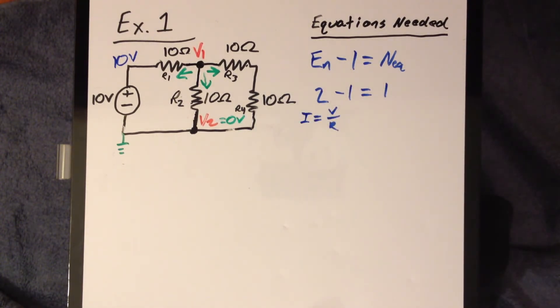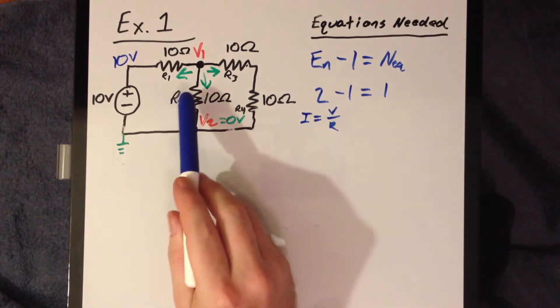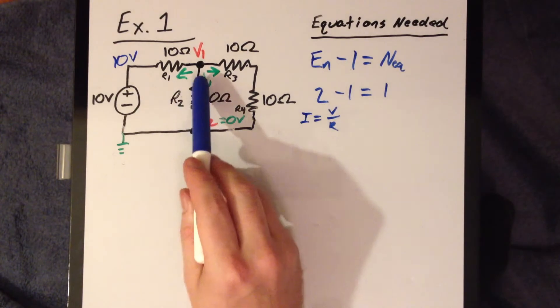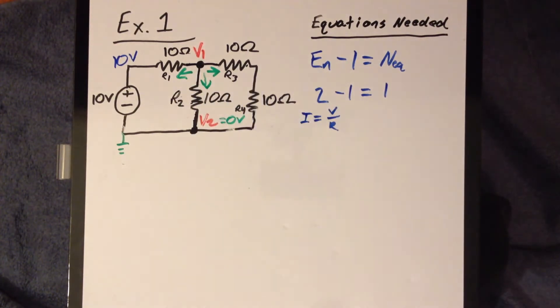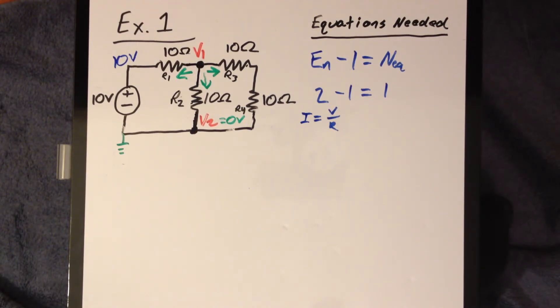Now we're going to use Kirchhoff's Current Law to sum up the currents going in and out of the different nodes. We'll make things standard by saying all currents are going away from the node. For node V1 — the one we're solving for since V2 is already 0 — Kirchhoff's Current Law says all currents leaving the node must sum to 0.